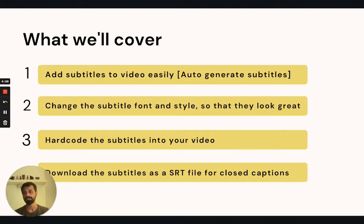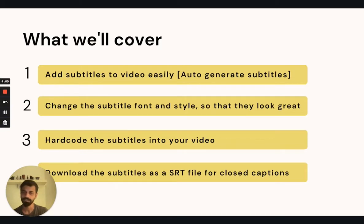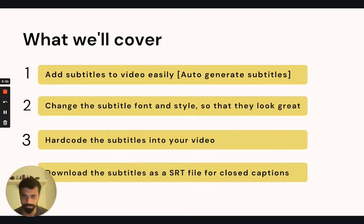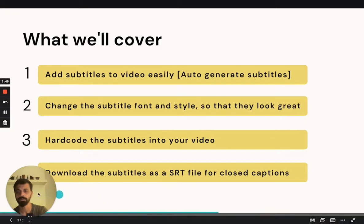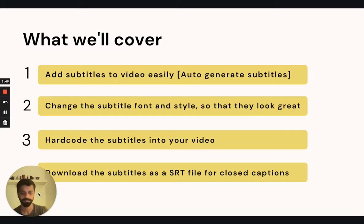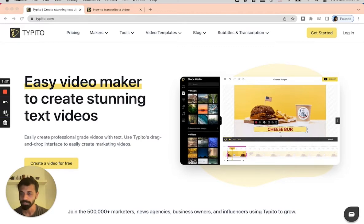First and foremost, we will see how you can add subtitles to your video easily — that is, auto-generate subtitles. Then we will see how you can change the subtitle font and style to make it on brand for your company or business. We will also see how to hard code subtitles into the video, and finally how to download the subtitles as an SRT file for closed captions. To do this, we will head on to Taipito.com.